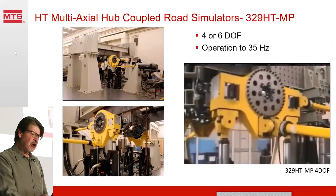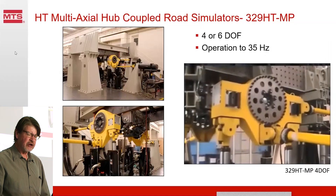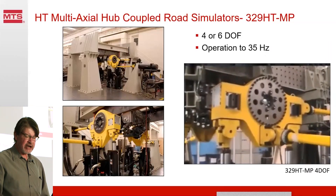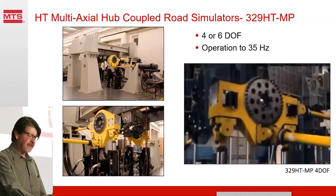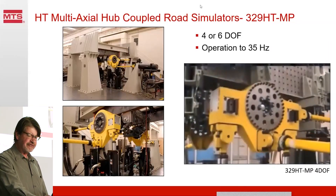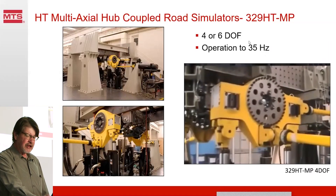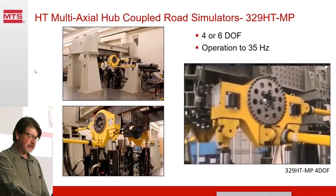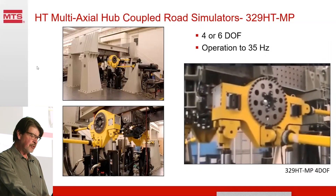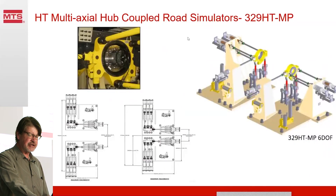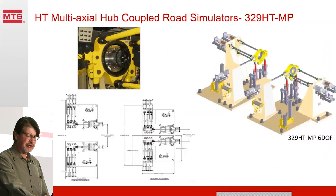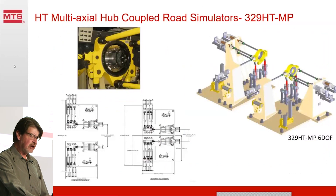This is a multi-axial hub-coupled road simulator called the 329HTMP. It has four or six degrees of freedom and operates up to 35 Hz — pretty good for a truck range, as most testing ends around 25 or 30 Hz. This is a six degree of freedom configuration with steer and camber as well as vertical, lateral, longitudinal, and torsional axes.